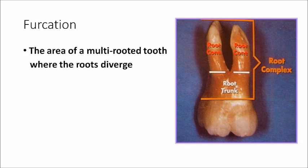First, furcation involvement. We have to know what is a furcation. It is simple — the area of a multi-rooted tooth where the roots diverge. Furcation is found only in a multi-rooted tooth and it is the area where these roots diverge.